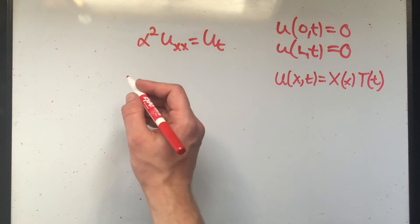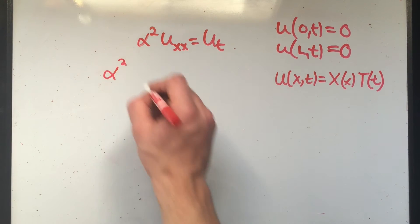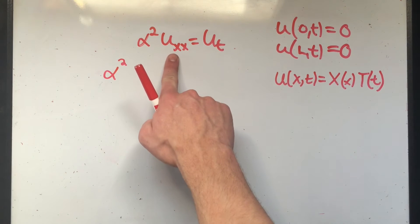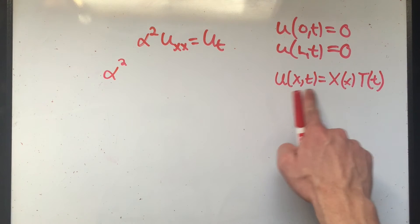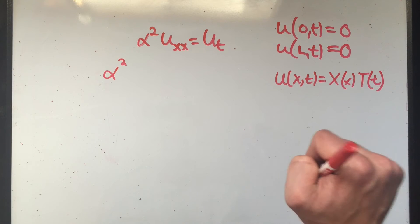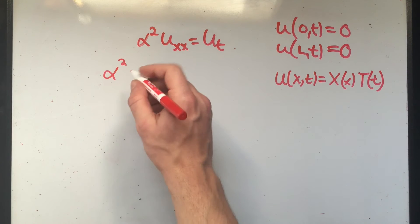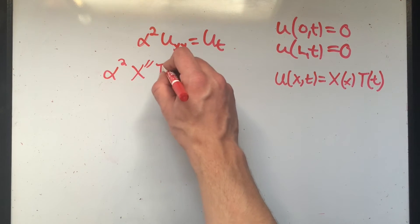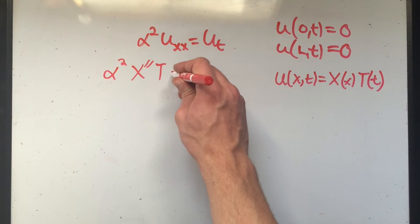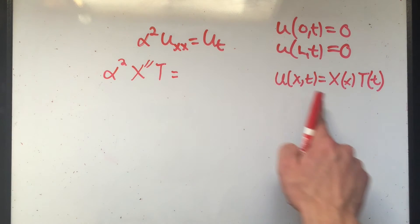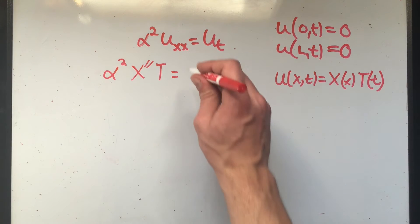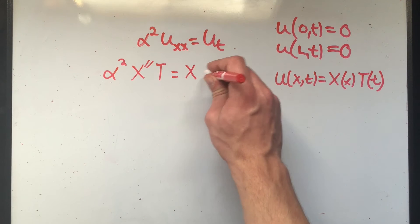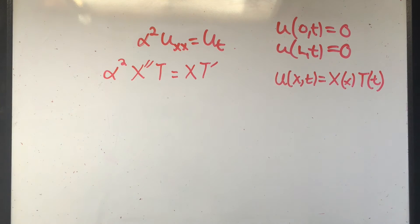If I keep this assumption, that means this equation is going to be alpha squared uxx, that means I'm taking the derivative of this thing in respect to X twice. If I'm taking the derivative in respect to X, T is a constant. So this will be X double prime times T. I'm not going to write the of X and the of T. Here, I'm taking the partial of this function in respect to T one time. So this is going to be X T prime. I don't know what the derivatives are. I just know that this is true.